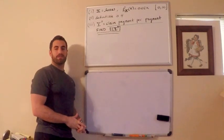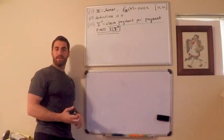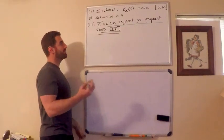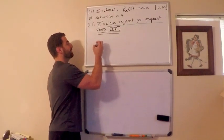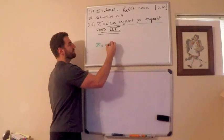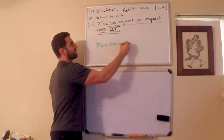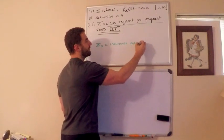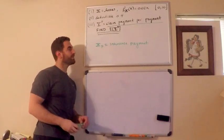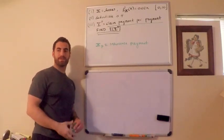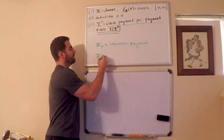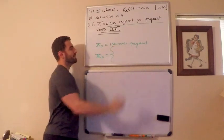First thing I want to do is write down something regarding the insurance payment. I'm going to give another random variable, I'll call this X_p, X sub p. This is just the insurance payment. In other words, if I'm the insurance company, how much am I going to pay and when am I going to make a payment?